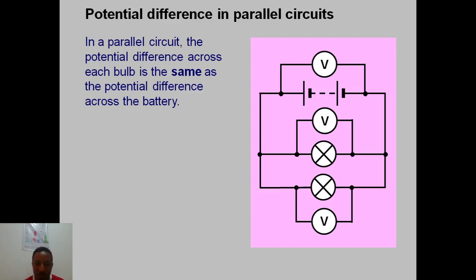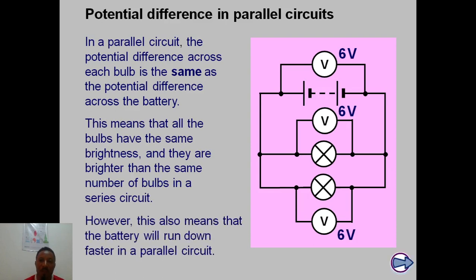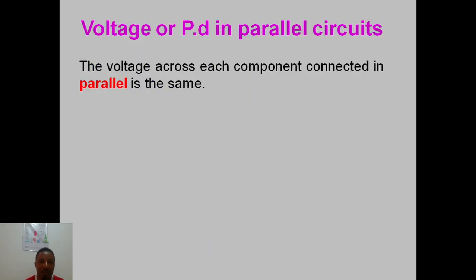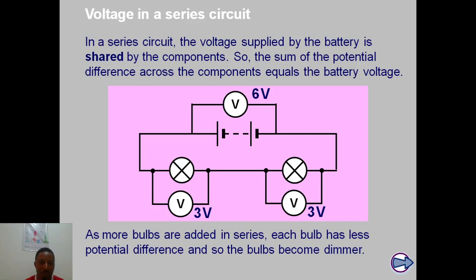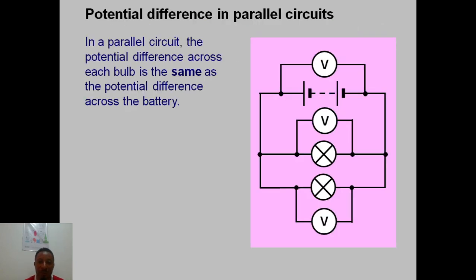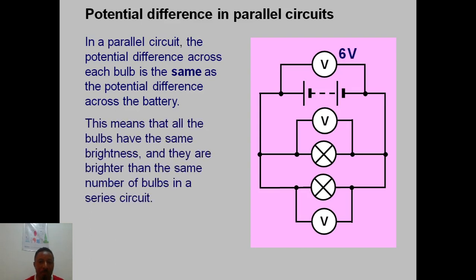So if I have six volts, each bulb gets six volts. When I keep adding more and more bulbs in parallel, each of them still has the same voltage. The only difference is that the battery will run flat faster. The energy supply is the same for each component in a parallel circuit, so the brightness of the lamps remains the same — they won't get dimmer as they do in a series arrangement.